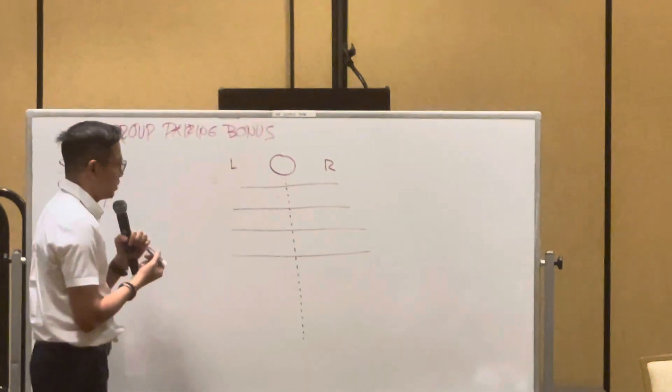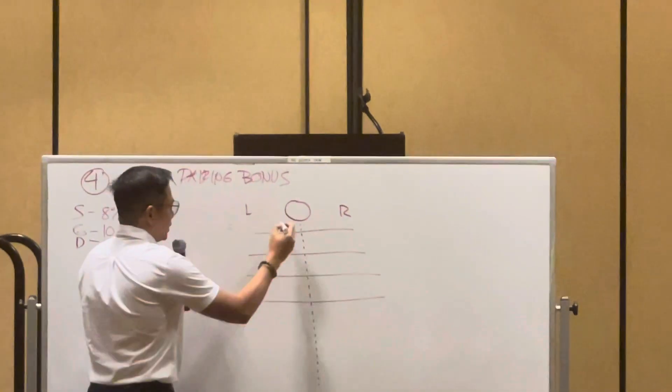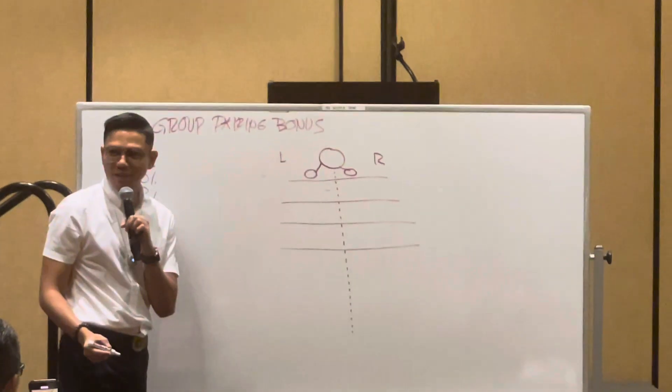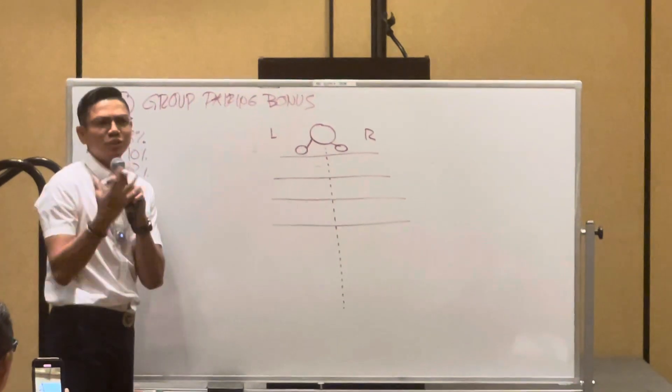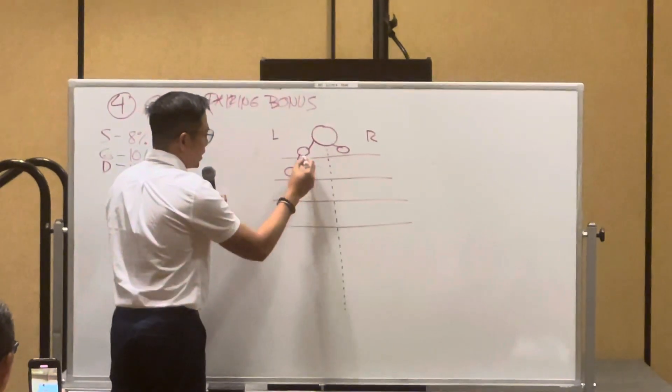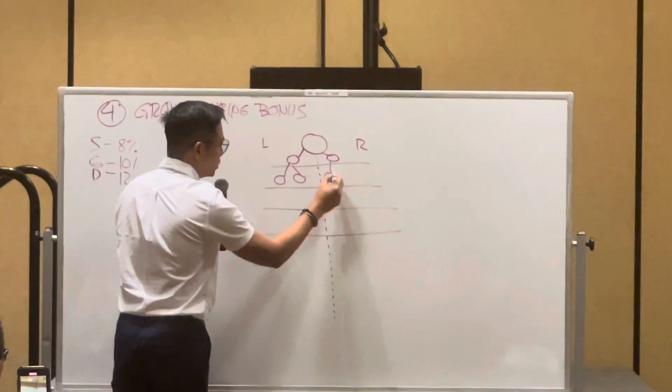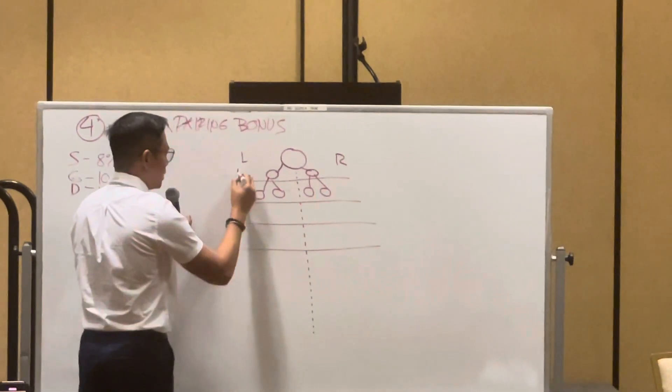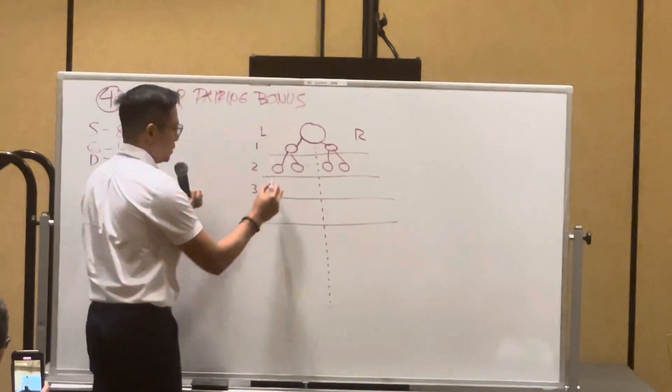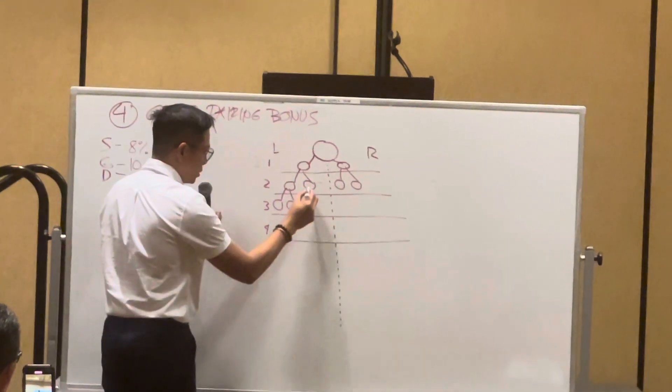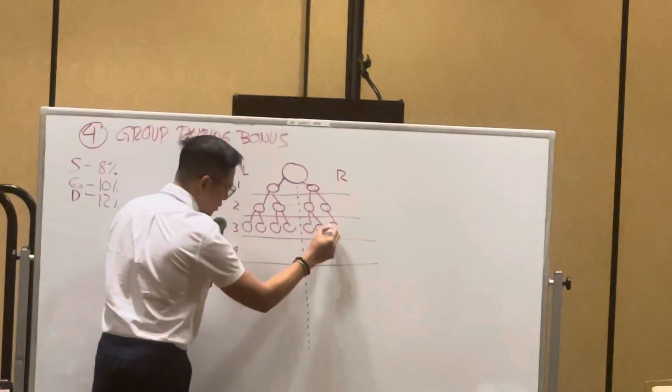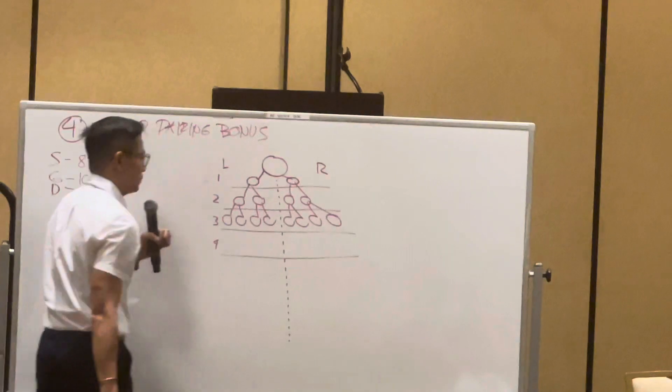So first level goes one, two. Yes? Alright, let's assume everybody gets two. Second level. This account gets two, this account gets two. So first level, second level, third level, fourth level. This guy gets two.